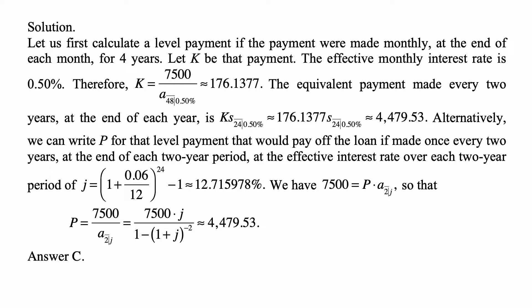The effective monthly interest rate is 0.5%, so the payment K is 7,500 divided by A angle 48 at 0.50%. That's 48 months, assuming the payments are at the end of each month, so it's an annuity immediate, and that equals 176.1377.